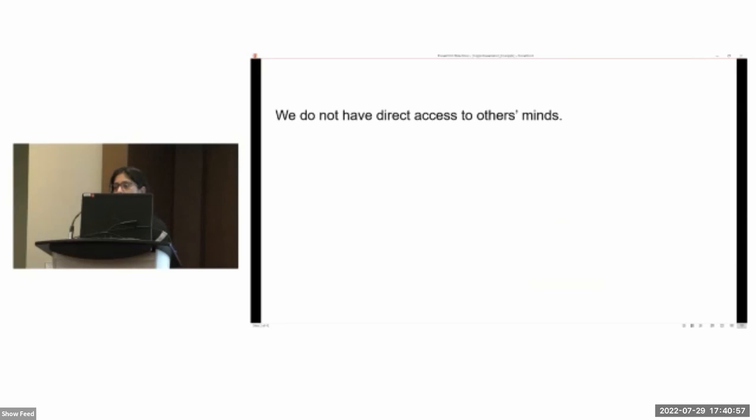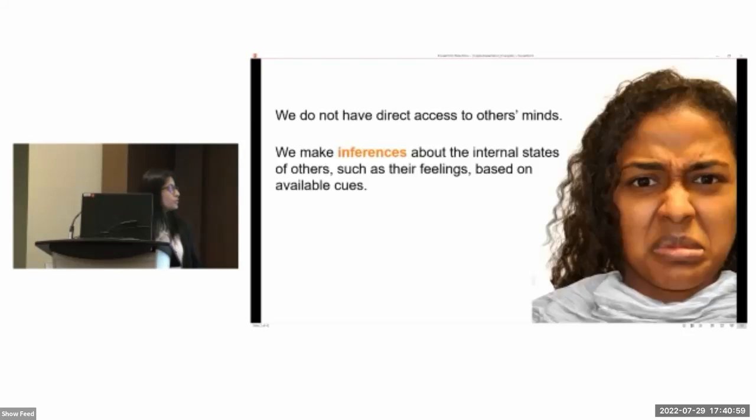So we don't have direct access to other people's minds, but we do make inferences about others' internal states, such as their feelings, based on the cues that are available to us. And this is what we often refer to as emotion inferences.